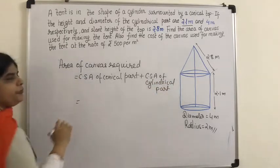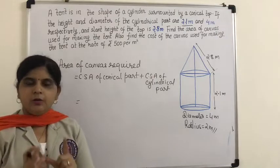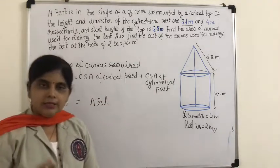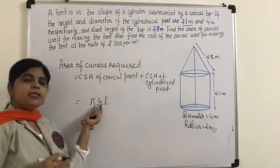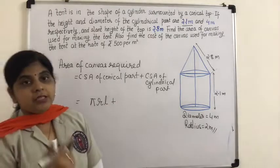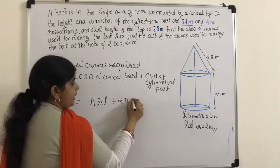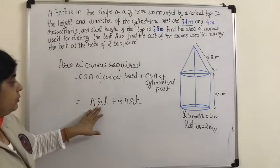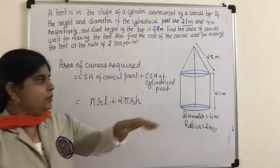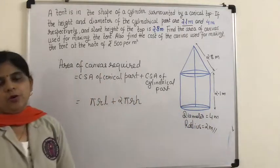The formula for curved surface area of a cone is πrl, where r is the radius of the base and l is the slant height. The curved surface area of the cylinder is 2πrh. Note that the cone is standing on the cylindrical part, so the radius of the base is the same for both — that is why we use the same value of r.